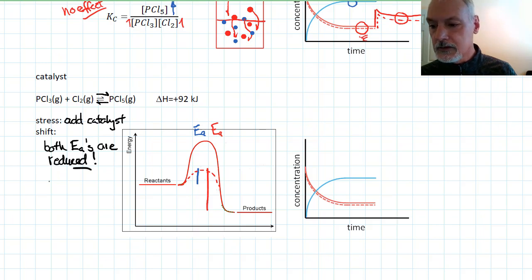And as a result, there's no shift. Both forward and reverse reactions are affected equally, and the equilibrium constant stays the same. So what would happen to my graph? Well, it would just continue on from where it left off.